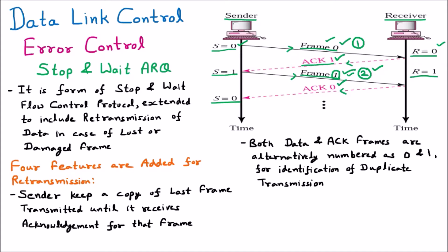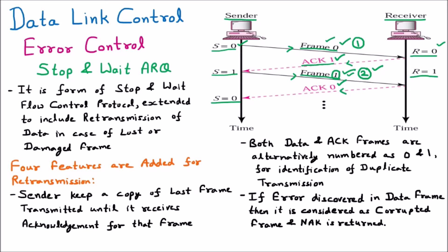The third feature: if an error is discovered in a data frame, it is considered a corrupted frame and a NAK (Negative Acknowledgement) is returned. When the receiver encounters an error, it considers it a corrupted frame and sends a NAK, meaning this packet is not meaningful. The NAK frame is not numbered like data and acknowledgement packets, and it tells the sender to retransmit the frame.